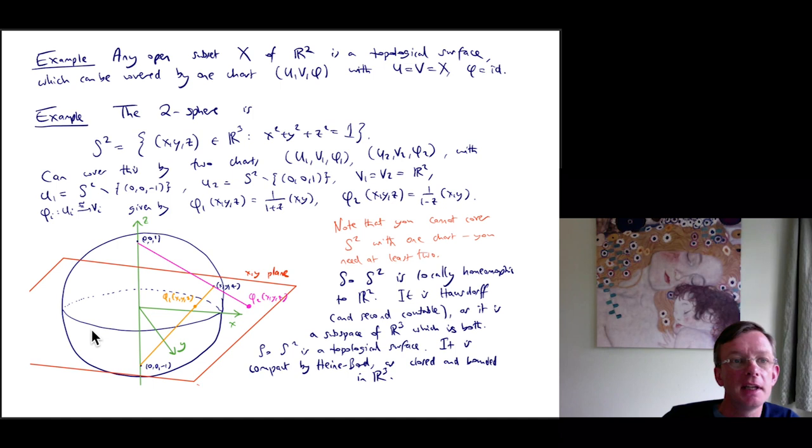OK, let's look at some examples. Firstly, any open subset X of R² is a topological surface, which you can cover by a single chart, U, V, phi, in which U and V are both equal to X, and phi is the identity map.